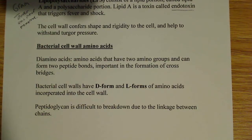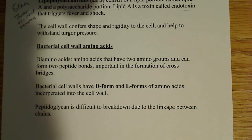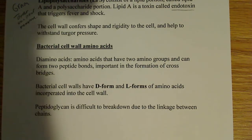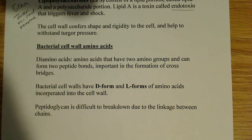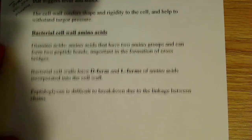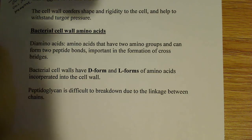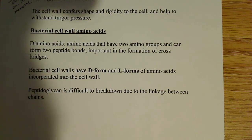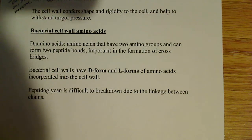Bacterial cell wall amino acids include what are known as di-amino acids — amino acids that have two amino groups. Having two amino groups means they can form two peptide bonds, which is important for the formation of peptide crossbridges. Bacterial cell walls also have both D-form and L-form amino acids. L-forms are the most common amino acids used in proteins generally, but bacteria can use both D-form and L-form amino acids and incorporate them into the cell wall.